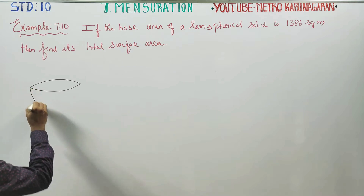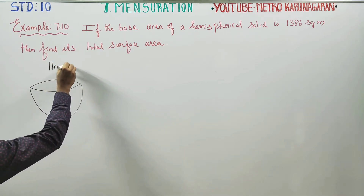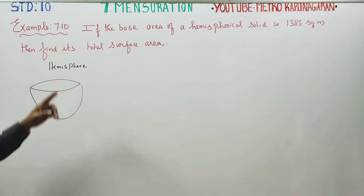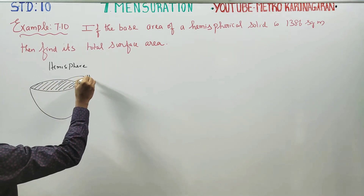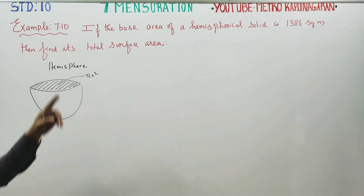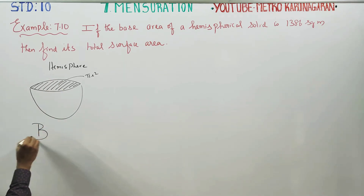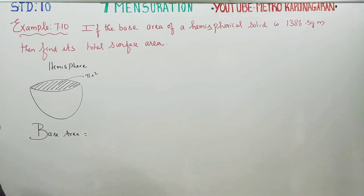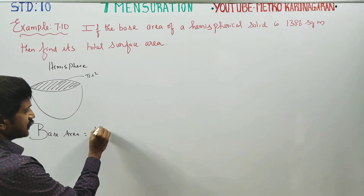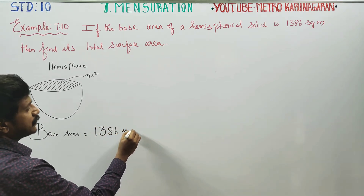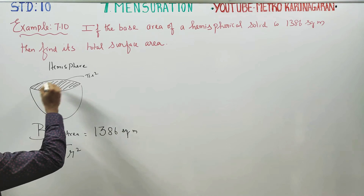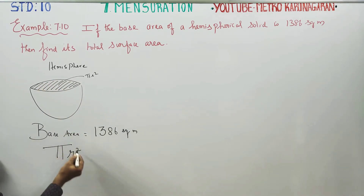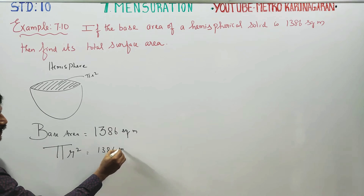For a hemisphere, the base area is the flat circular face. This base area is a circle shape, so its formula is pi r square. The first given information is that the base area equals 1386 square meters. Base area equals pi r square, which is the area of the circle.